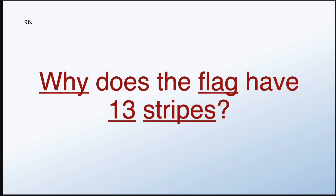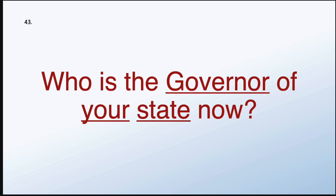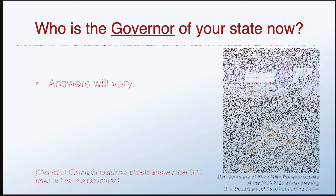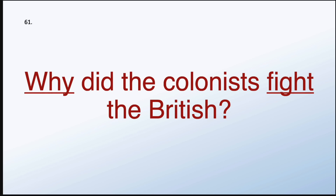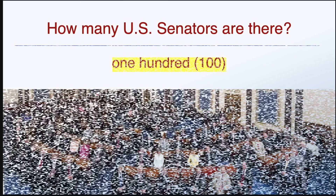Why does the flag have 13 stripes? Because there were 13 original colonies. Who is the governor of your state now? Answers here will vary depending where you live. Why did the colonists fight the British? Because of high taxes. How many U.S. Senators are there? 100.